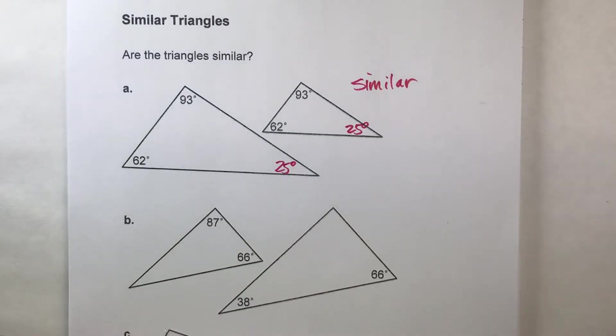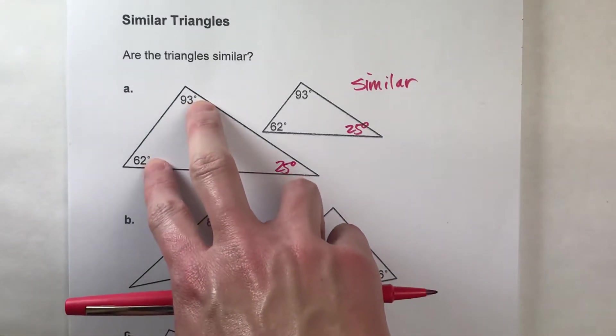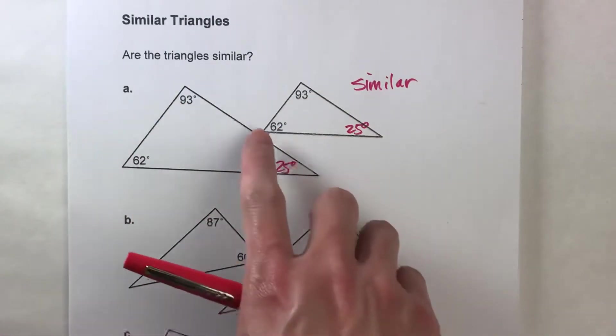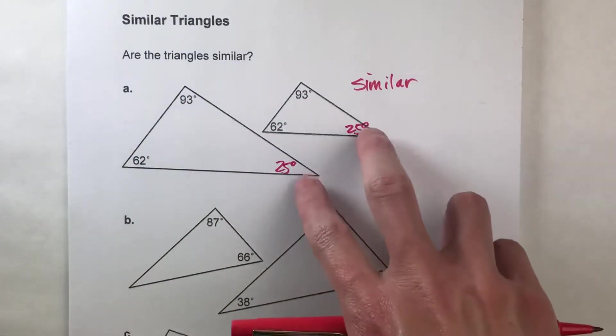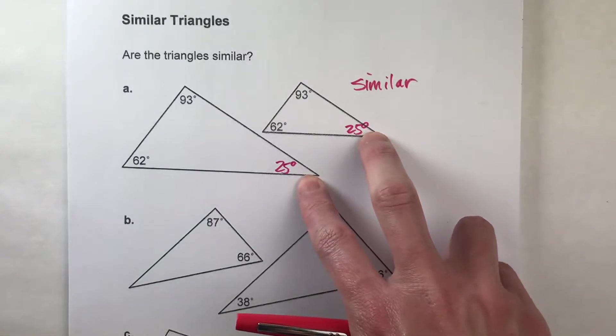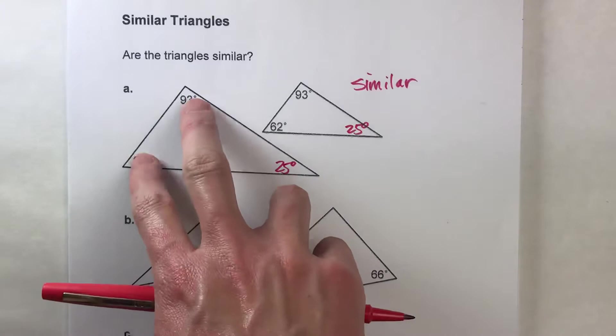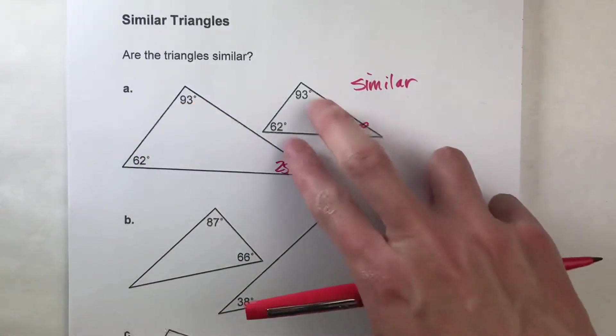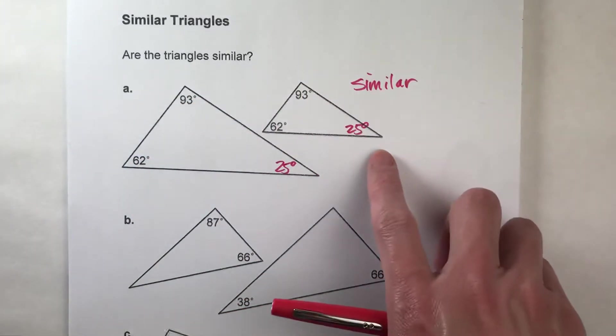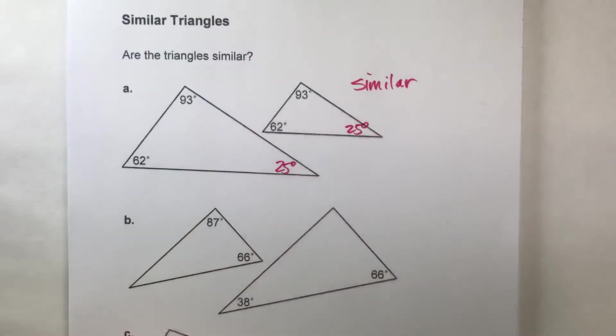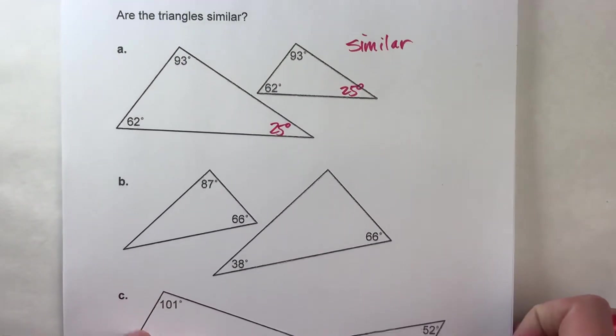Now notice one thing though. These two angles are the exact same as these two angles, and since the angles have to add up to 180, of course these two angles are going to be the same. So there is a similarity shortcut with triangles. If two of the angles in the triangle match up with two of the angles in the other triangle, the third one will automatically be equal and the triangles will be similar. So that's a good one to keep in mind as you're working.